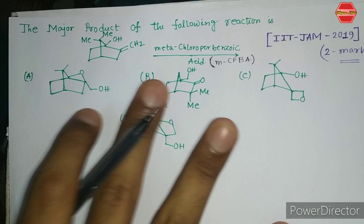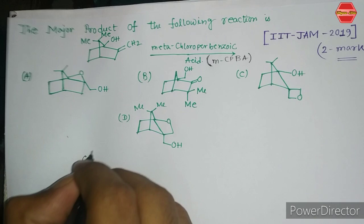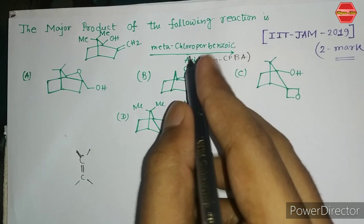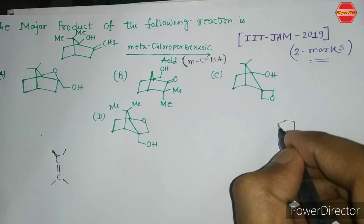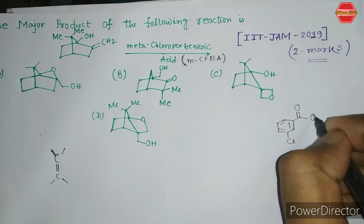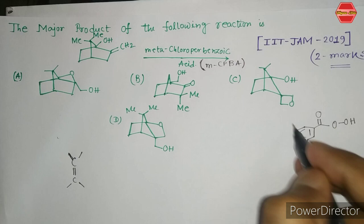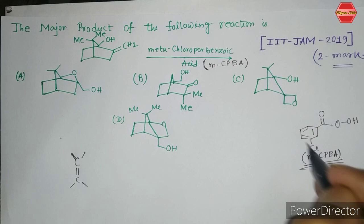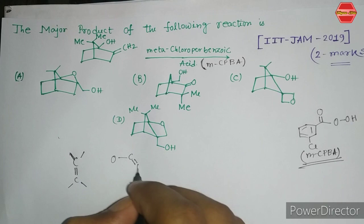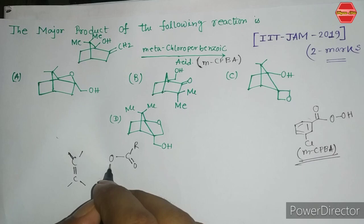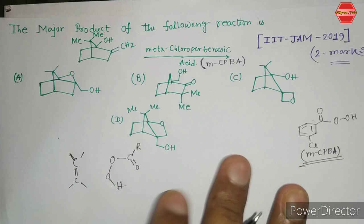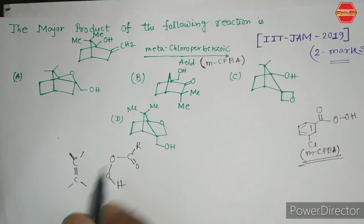I've written the general mechanism of MCPBA. If we take a compound — here is our alkene — we treat it with MCPBA. The structure of MCPBA, metachloroparbenzoic acid, has the meta-chloro group and the peracid part. The R part in the generalized structure represents the rest of the molecule.